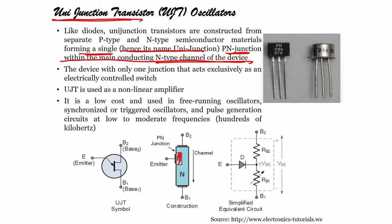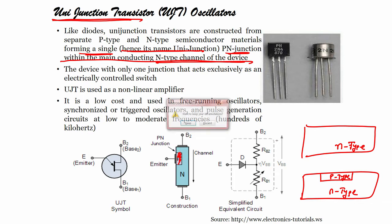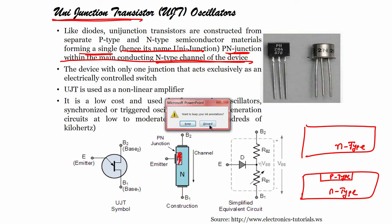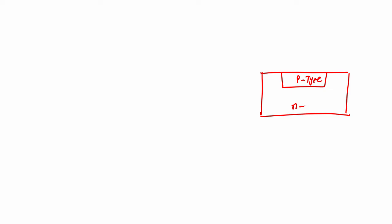This is a fabrication process. If I have an n-type semiconductor and I want to have a p-type material within that n-type semiconductor — this is what we need. What is the process step? We need a p-type material in an n-type substrate.